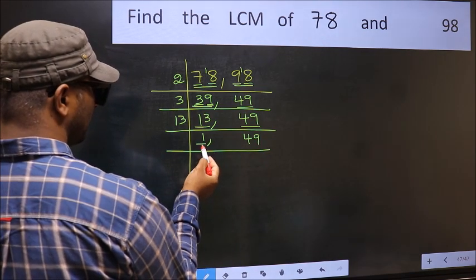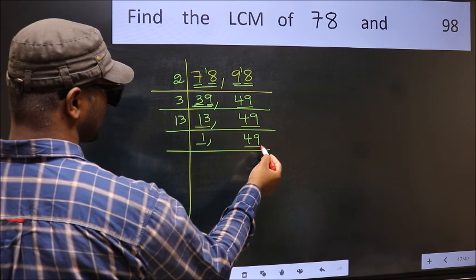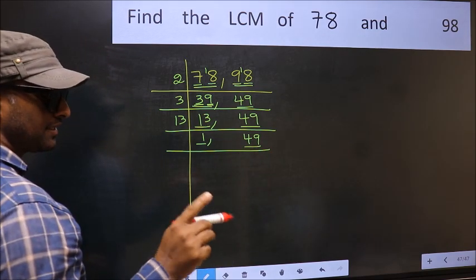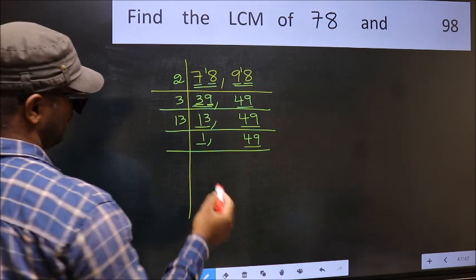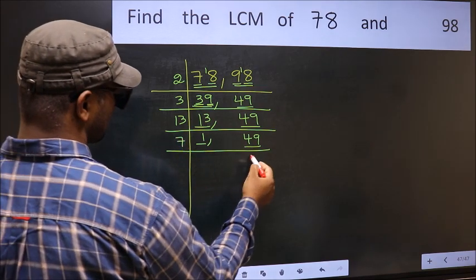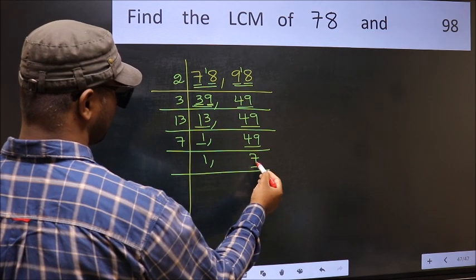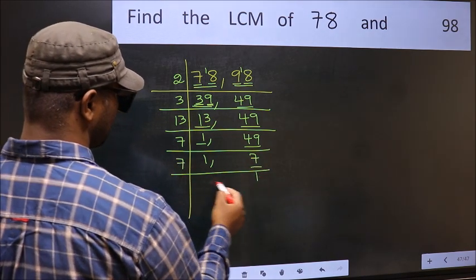Now we got 1 here, so focus on the next number 49. We have 7. 7 is a prime number. So 7 once, 7.